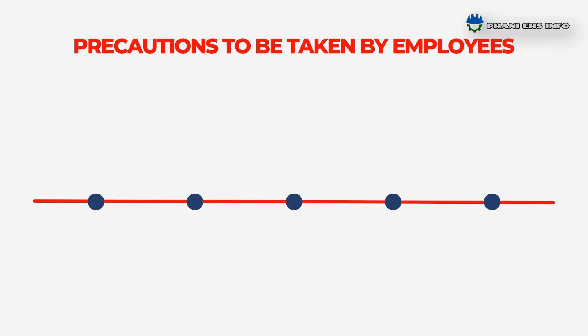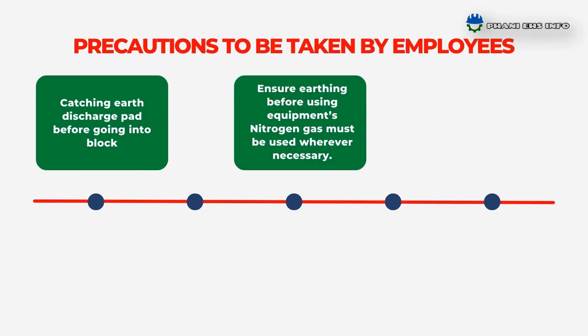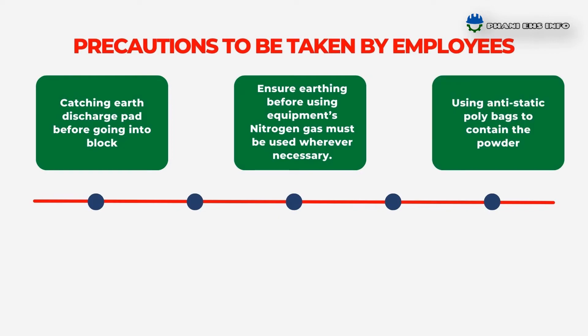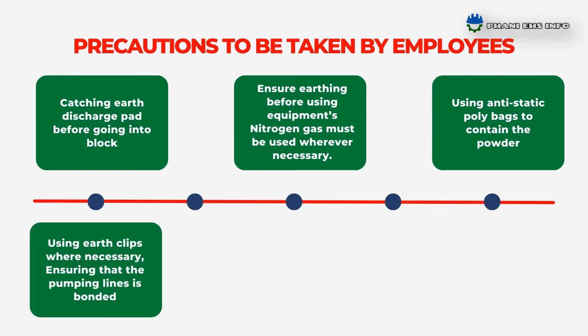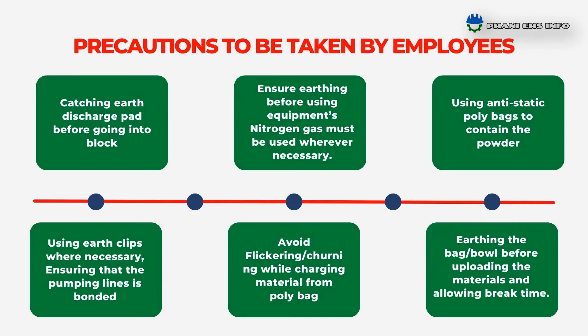Precautions to be taken by employees: catch the earth discharge pad before going into the block, ensure earthing before using equipment, use nitrogen gas wherever necessary, use anti-static poly bags to contain powder, use earth clips where necessary, avoid flickering and churning while charging material from poly bags, ensure that pumping lines are bonded, and earth the bag valve before uploading materials, allowing adequate break time.